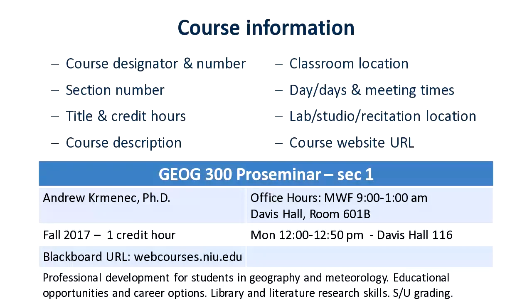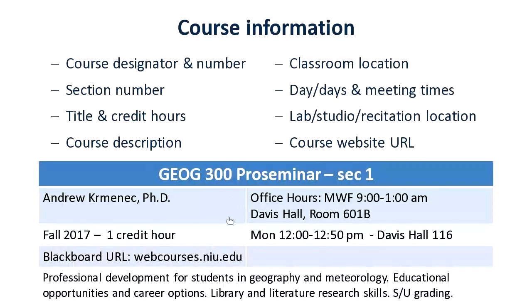Course information covers the basic nuts and bolts of the course. You would include on your syllabus a course designator and number, section number, title, credit hours, classroom location, course days it meets, and so on — anything that will help students be successful in the class. Often putting this kind of information in a grid or table format makes it easy for students to access. Be specific and make sure the information is actually correct.